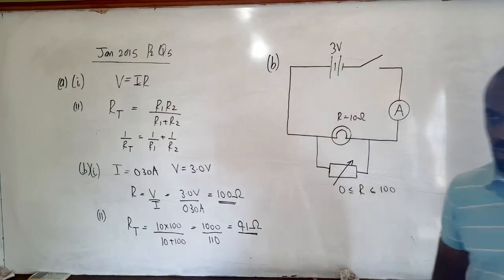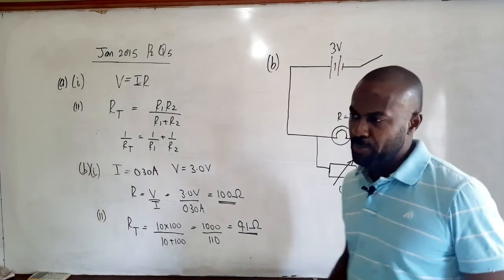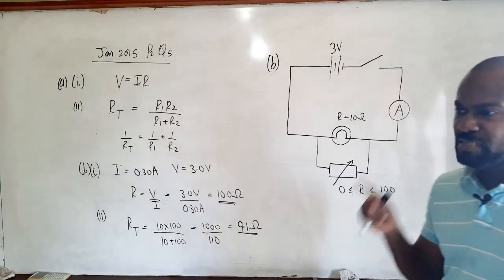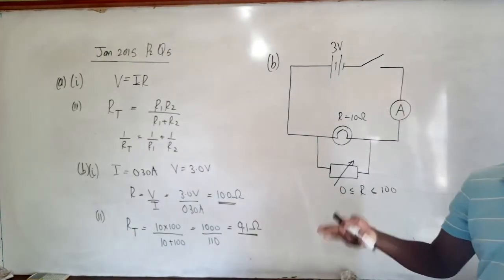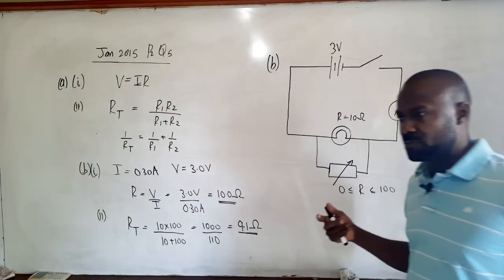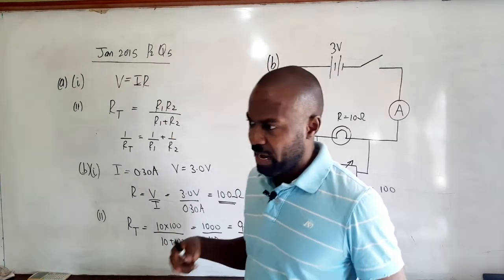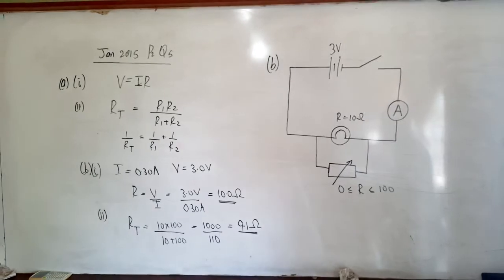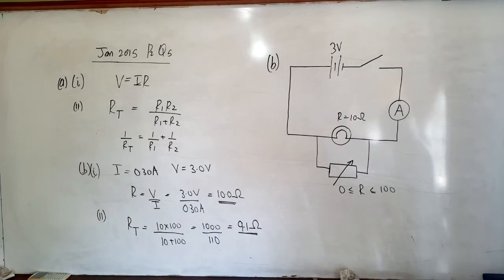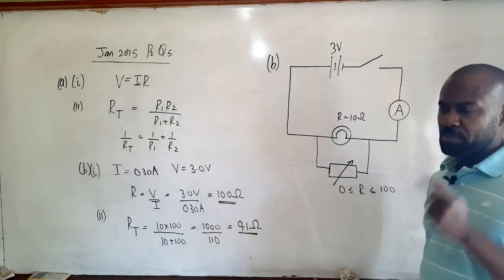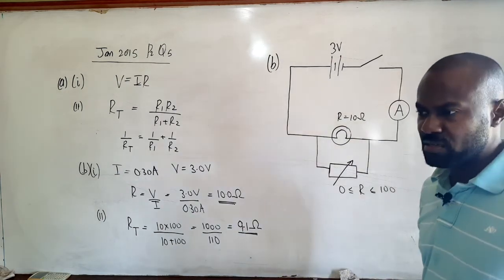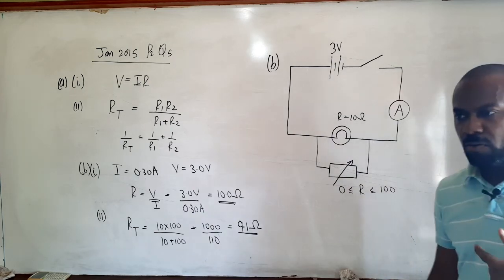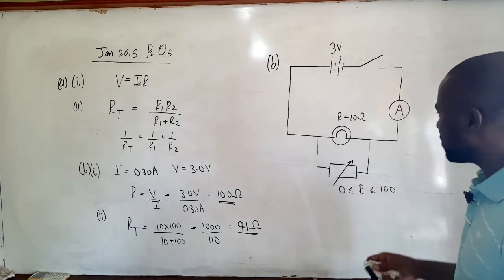Part B4 refers back to the assumption made in B2 — that the resistance of the bulb remains constant — and states that assumption is incorrect. With the aid of an IV graph, we must indicate how the bulb's resistance actually varies with current. We no longer need the circuit diagram, so let's draw the IV graph.